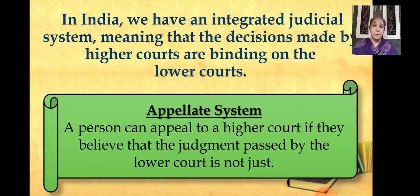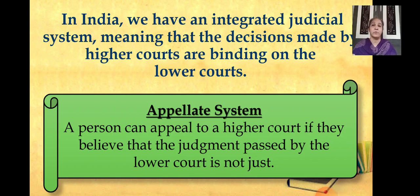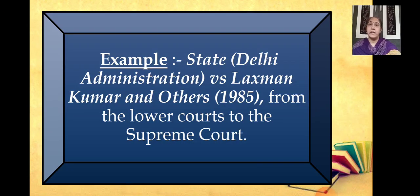A person can appeal to a higher court if they believe that the judgment passed by the lower court is not just. If I am not satisfied with the decision given by the lower court, I have the authority as a citizen of India to appeal the same case again in the higher court. This means a person has the right to appeal in the other court. You can understand this appellate system through one example — the Lee Administration versus Lakshman Kumar and others, in the year 1985.